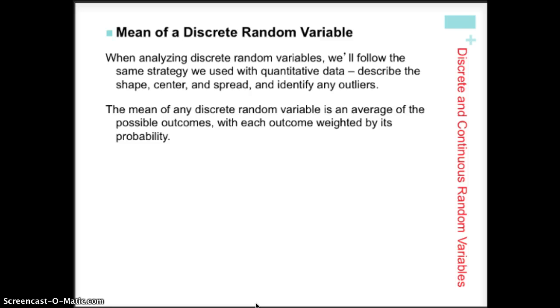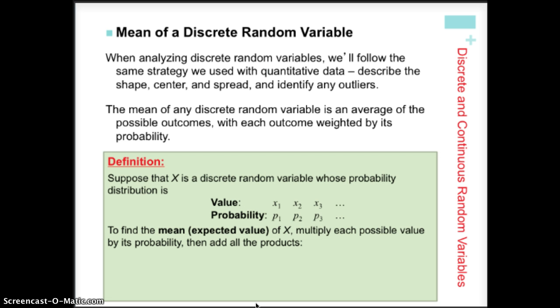When we look at discrete random variable distributions, we're going to use our GSOCs — shape, center, spread, outliers, and gaps. Now let's talk about the mean of a distribution. The mean of a probability distribution we also call the expected value. We find it like a weighted average, where we multiply the value of the variable by the associated probability and then add up each of those products for the whole distribution. We refer to it as E(X) — the expected value of random variable X — which is also written as mu sub X.